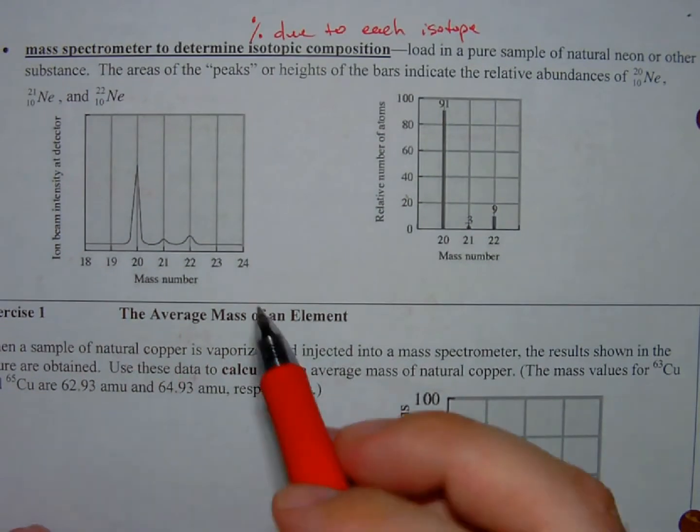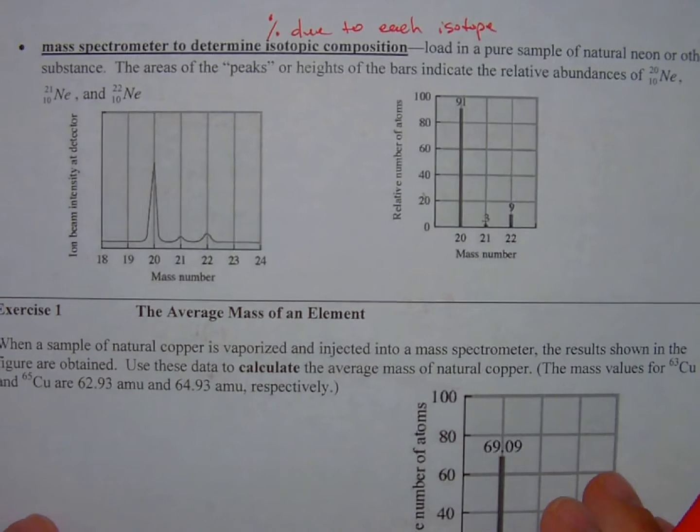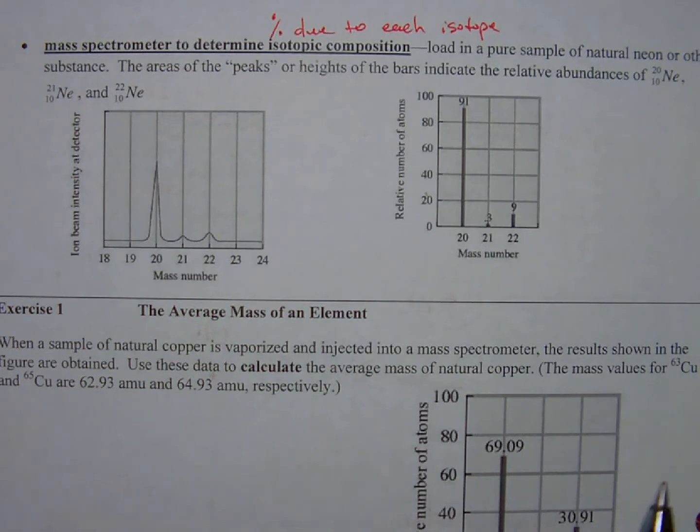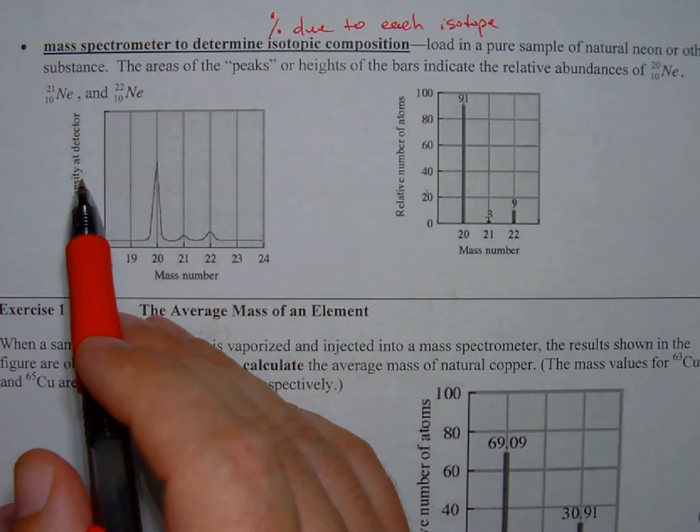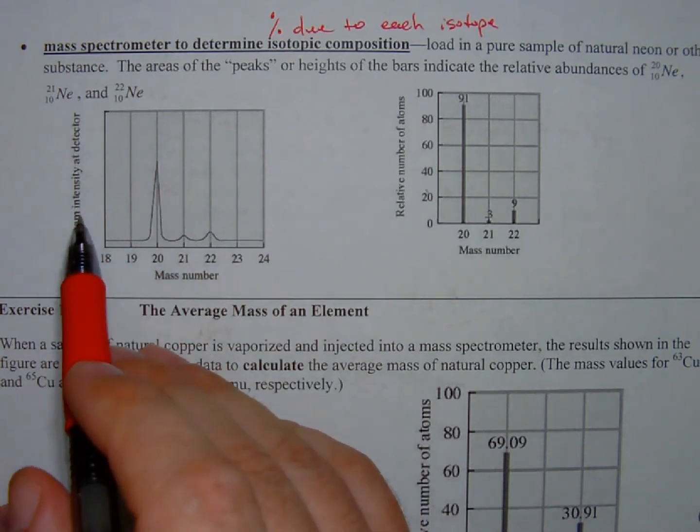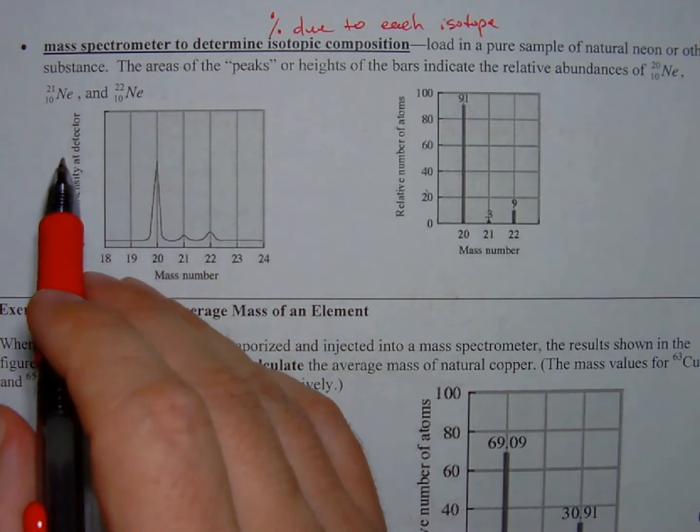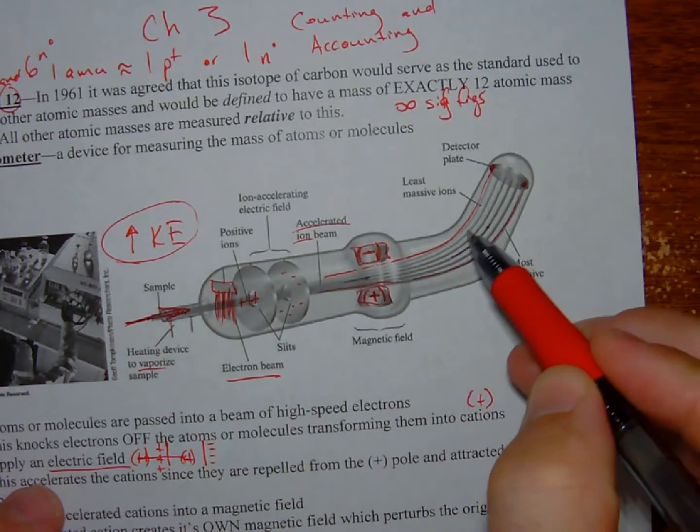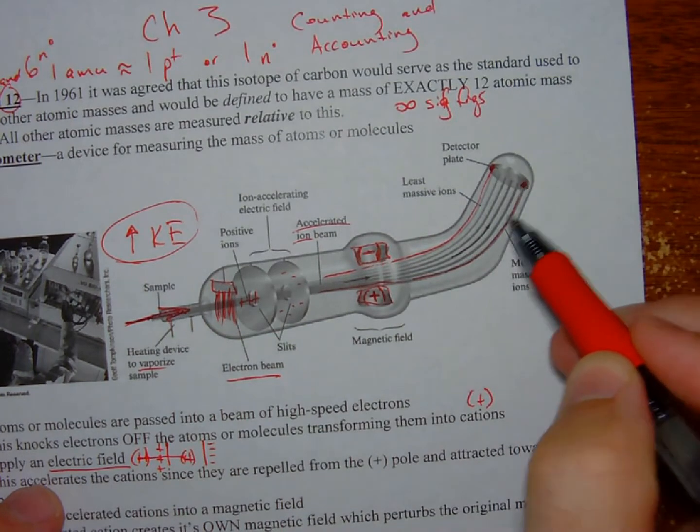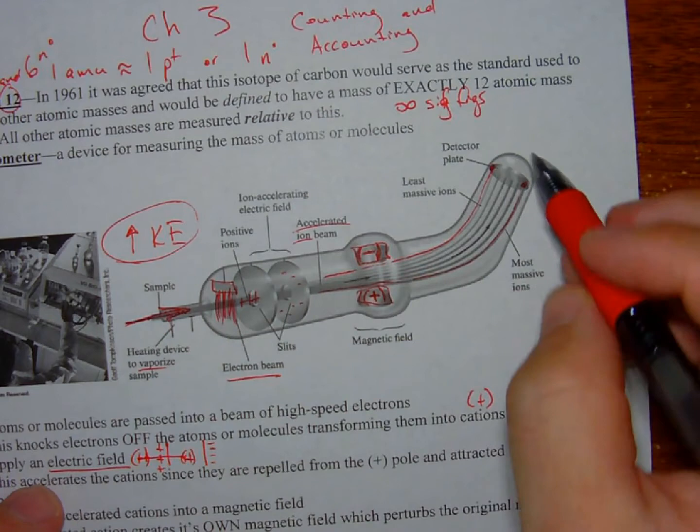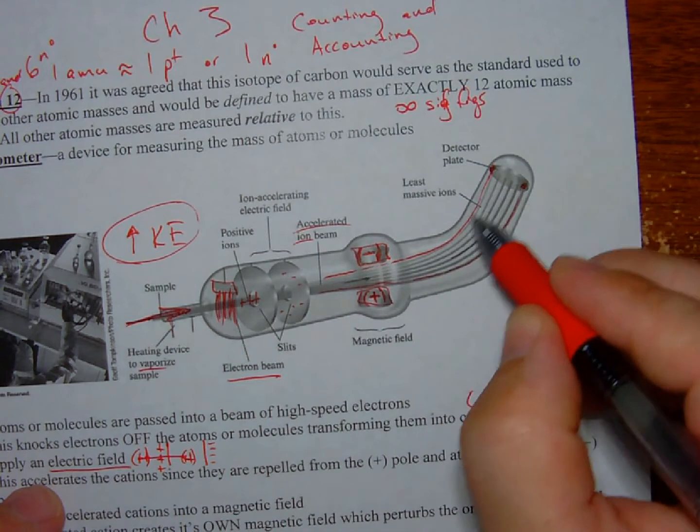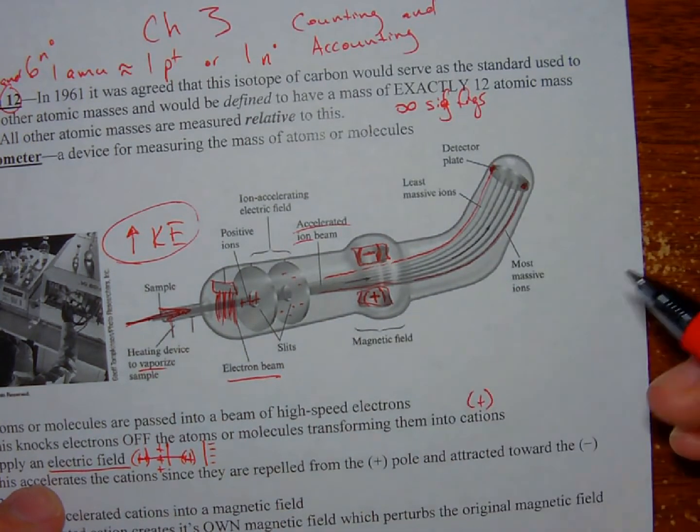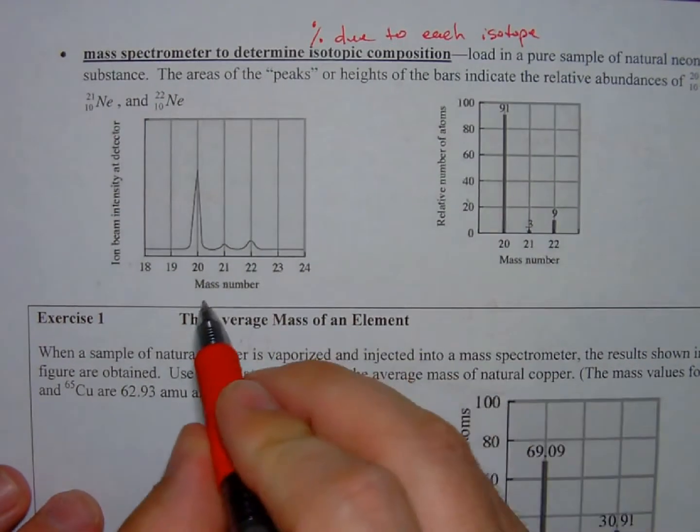So let's interpret this data. As we look at this first graph, we always want to make sure we read the axes. We can have no idea what a mass spectrometer is, but if we read the axes, we have a chance to interpret what's being said. The ion beam intensity at the detector - intensity, how much of it there is. Ion beam intensity at the detector. If we go back, remember these ion beams are being deflected and then being interpreted by the detector plate.